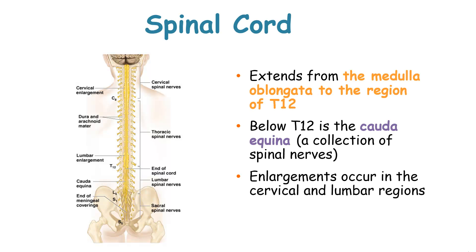The spinal cord normally extends from the medulla oblongata to the region of T12, that is thoracic vertebra number 12. Below the T12 level is the cauda equina, which is a collection of spinal nerves. Enlargements also occur in the cervical and lumbar regions.